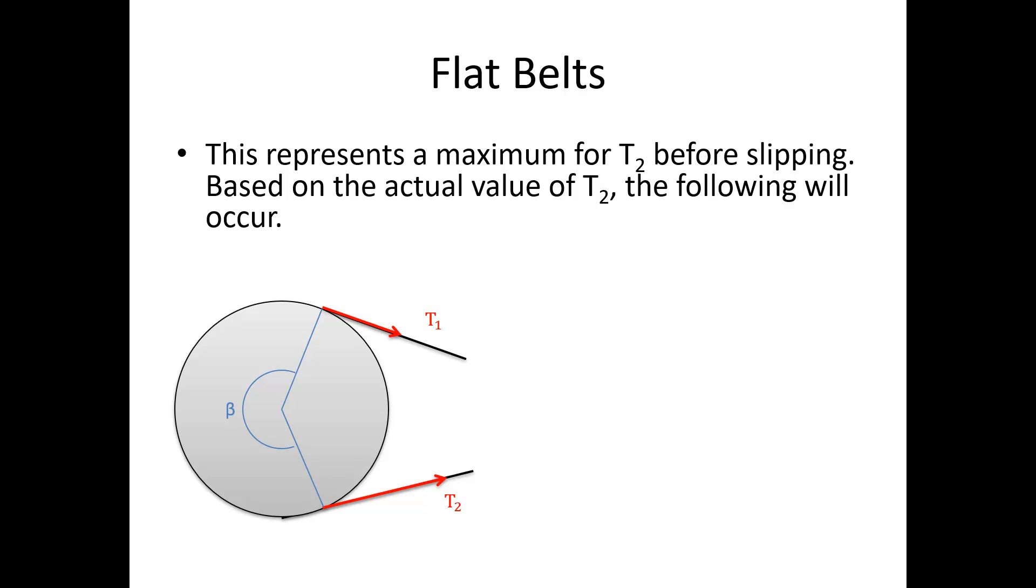This is our point of impending motion. If T2 is less than this T2 max that I calculated, the belt's not going to slip. If I'm trying to lift something, the cable around the tree branch won't lift. If I'm trying to drive something, like my motor connected to the blower with two pulleys, I don't want it to slip. That means the belt will effectively transfer power from input to output.